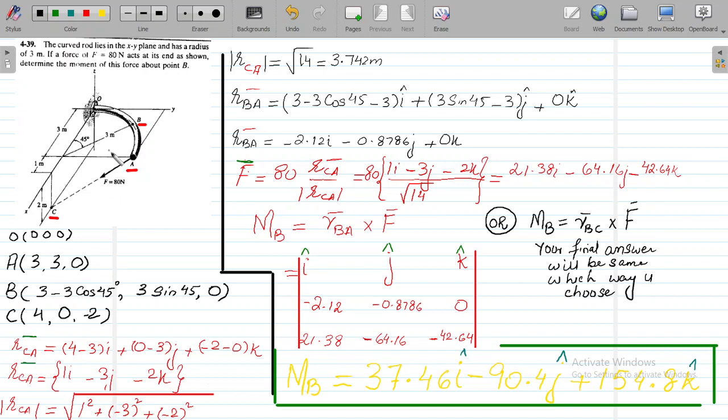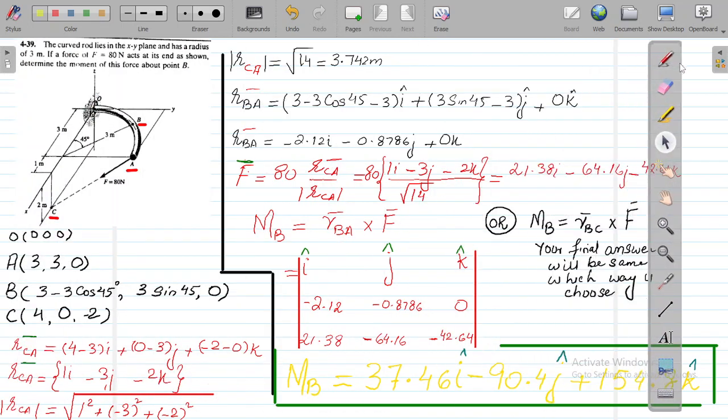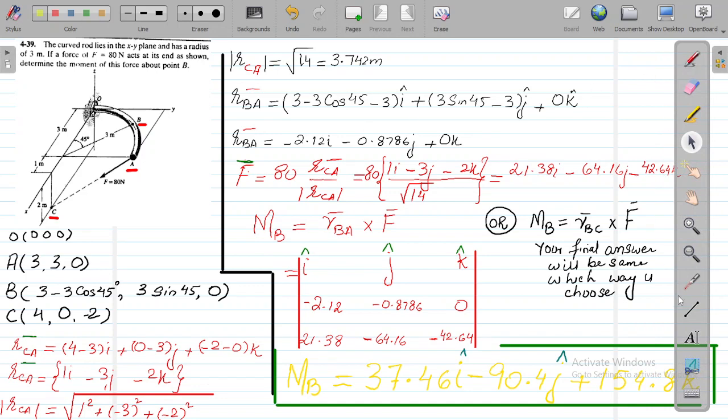Now we also need to calculate the coordinates of point B. B is a very unique point, lying almost at the mid of this rod. For the coordinates of B, the x-coordinate will be calculated as this distance from here to here is 3 meters, and we need to calculate the distance. We need to calculate this small distance.